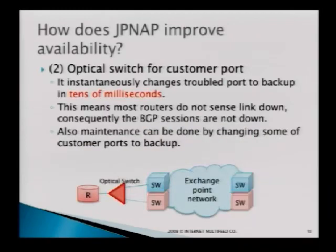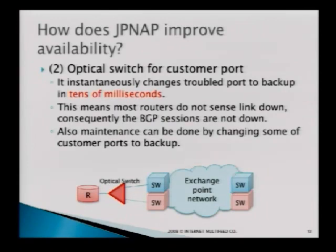The next technology is an optical switch for the customer port. This optical switch changes from main port to backup port instantaneously — meaning tens of milliseconds. The optical switch is always watching the light signal from the Ethernet switch to the customer end, and if the light goes down, the optical switch immediately changes the port to the backup side, done in tens of milliseconds.